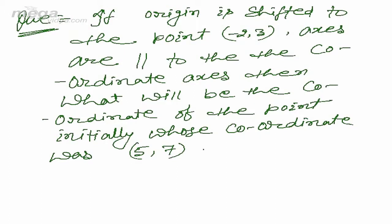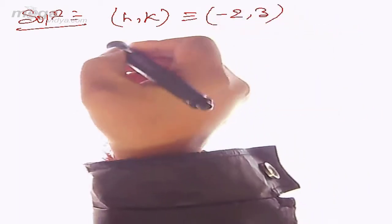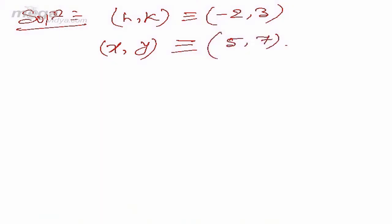The question is: if the origin is shifted to the point (-2, 3) and the axes are parallel to the coordinate axes, then what will be the coordinate of the point whose initial coordinate was (5, 7)? Here h comma k is (-2, 3) and initially the coordinate of the point was (5, 7). We have to find the coordinate of the same point when the origin is shifted to (-2, 3).